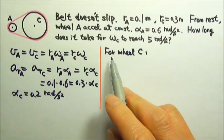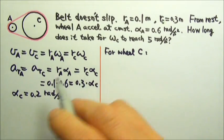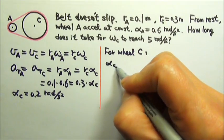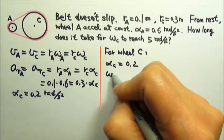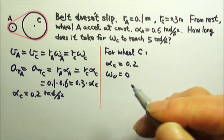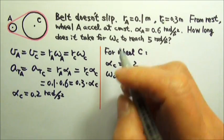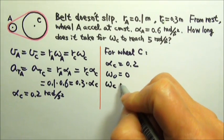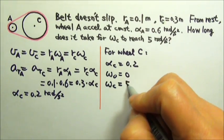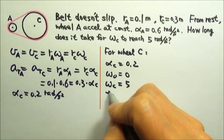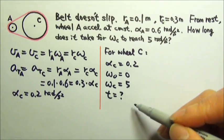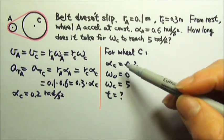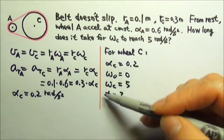So now for wheel C, we know that the angular acceleration is 0.2. Initially, the wheel starts at rest. And we know we want to reach a final angular velocity that is 5, and we want to know how long it would take. It's constant angular acceleration motion. Which equation connects these four things?